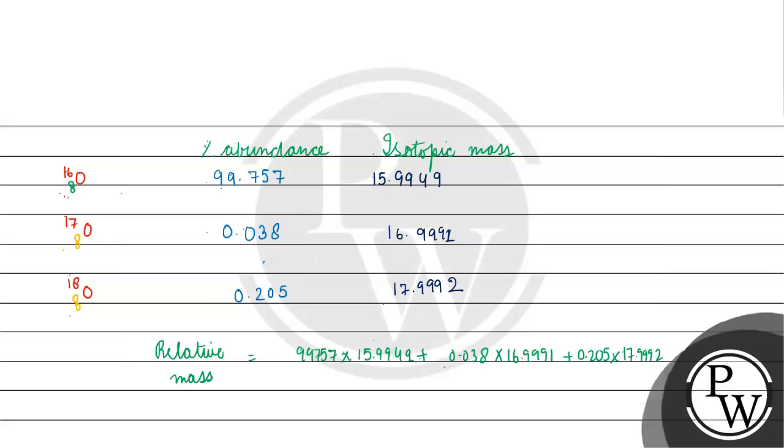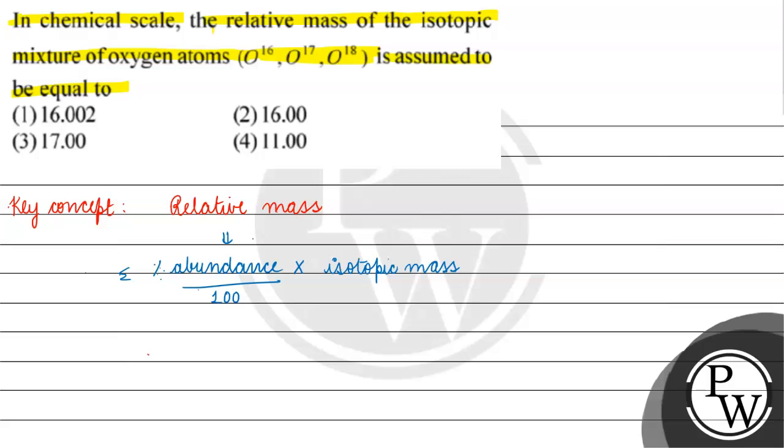What will happen? It will be divided by 100. How much will it be? It will be 16.00. Coming back to the question, the correct answer for this question will be option 2. I hope you understood it well, thank you.